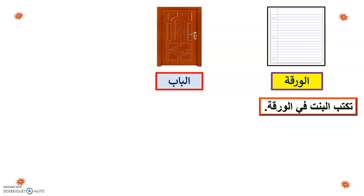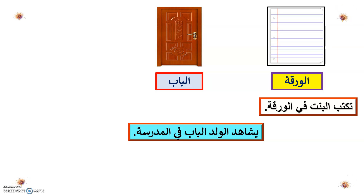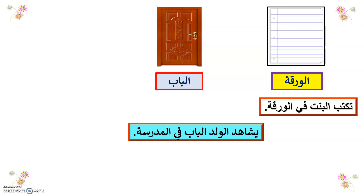Give me a sentence. Ana aqshahid albab fi almadrasa — I see the door in the school. Also: Yushahid alwalad albab fi almadrasa — the boy sees the door in the school, or in the class, fi alfas.